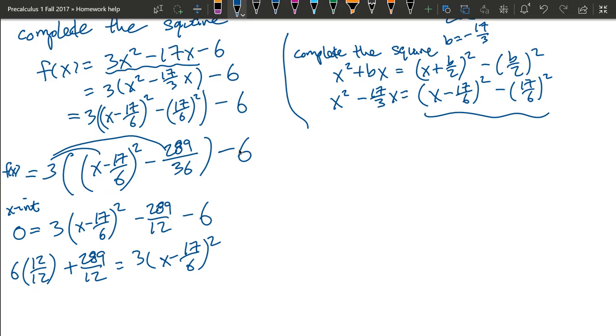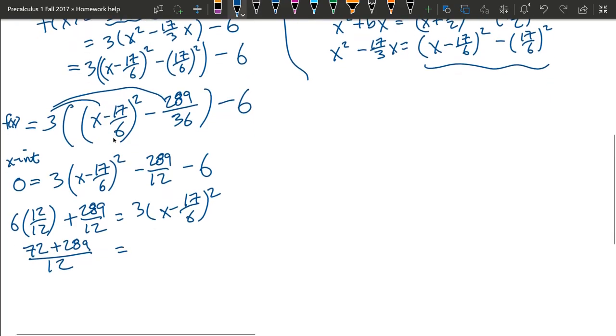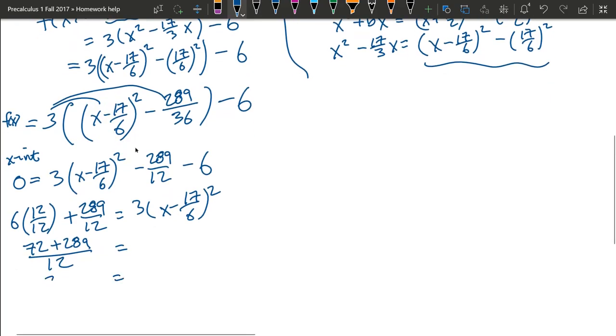So 6 times 12. That's 72. Plus 289 over 12. 361. I did not write the right side of this equation because the right side didn't change.